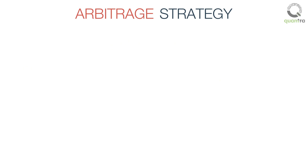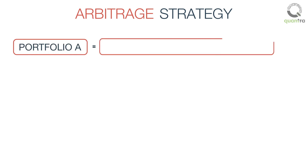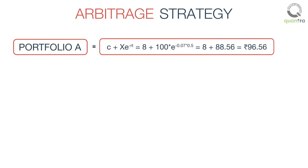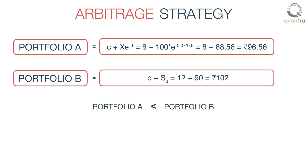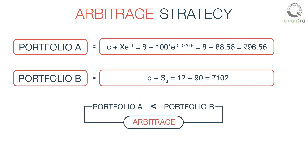Let us calculate the net worth of our portfolios. The worth of portfolio A, which consists of the call option and the bond, and similarly, the worth of portfolio B, which consists of the put option and the stock. Here, you can see that the value of portfolio A is cheaper than the value of portfolio B, so there is an opportunity for arbitrage. We can profit from the discrepancy in the price of the two portfolios, which essentially should have been equal.